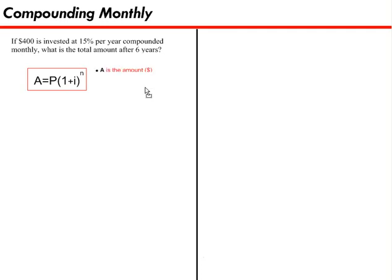That first variable, A, is the amount in dollars. It's the amount of money you end up with after you're done investing. P is the principal, also in dollars, and it's the amount of money that you start with before investing. I is in percent, and it's the interest rate, or how fast your money grows.